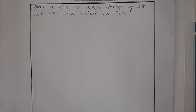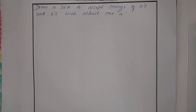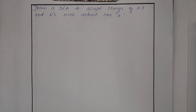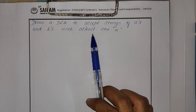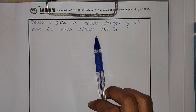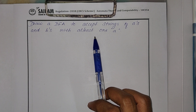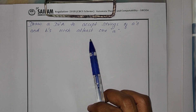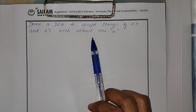In this video we'll see one more sum in designing a DFA. In the last video we have seen how to design an FSM. Here I have written the question: draw a DFA to accept strings of A's and B's with at least one A. When you get a question to construct a DFA, by reading the question I have to identify which type it belongs to — whether it is pattern recognition method or divisible by k problem or mod k problem.